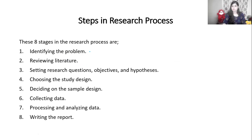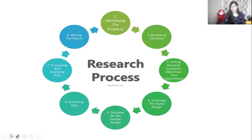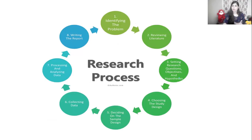The eight steps are: first, identifying the problem; second, reviewing the literature; third, setting the research questions, objectives, and hypothesis; fourth, choosing the research or study design; fifth, deciding about the sampling design; sixth, collecting the data; seventh, processing and analyzing the data; and eighth, writing the report. First, identifying the problem will lead to the literature review, and that will lead to formulating your objectives, hypothesis, and research question.